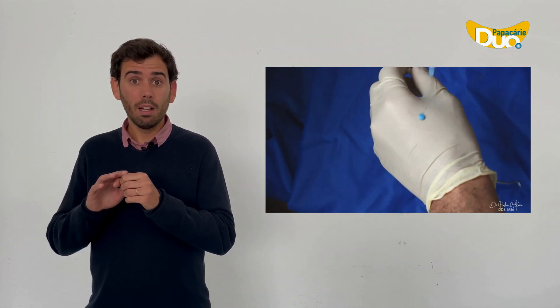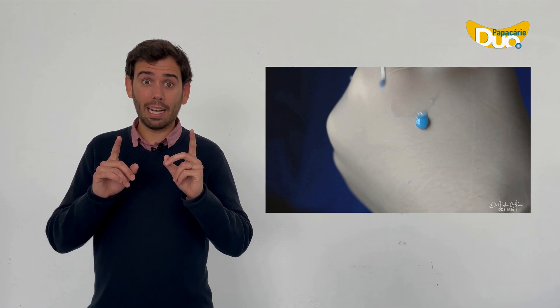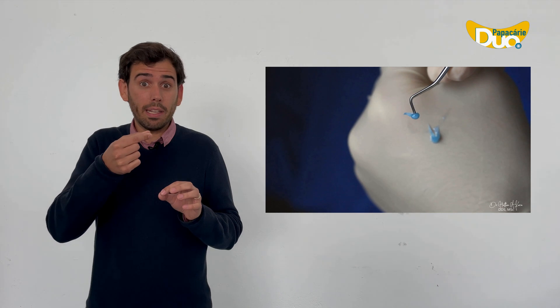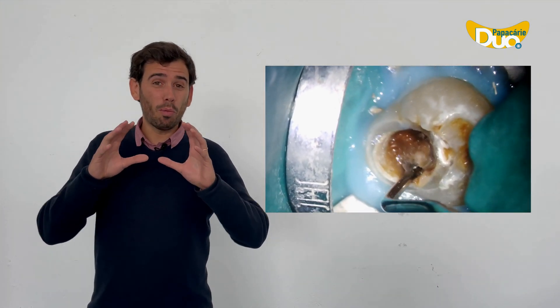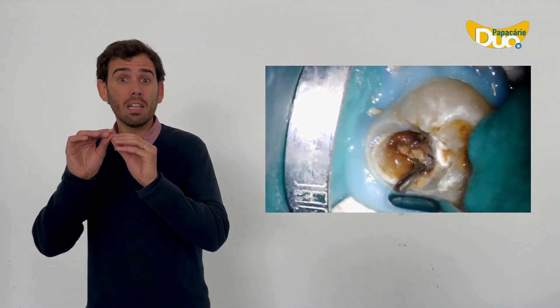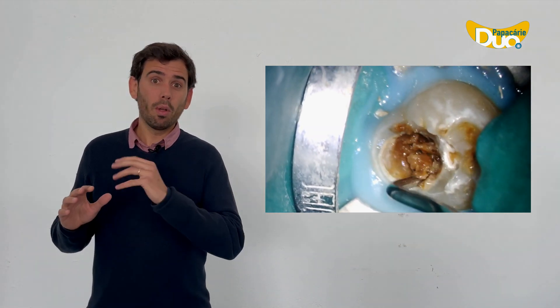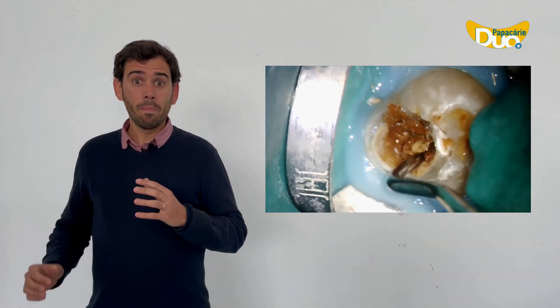With Papacarie it's super easy. Just one drop of this gel softens the caries and only the caries, respecting the healthy tissue, and you can remove the cavity with a curette. We don't care if it's a deep caries or a little tiny one. One drop of Papacarie and you can remove the infected tissue in 30 seconds.